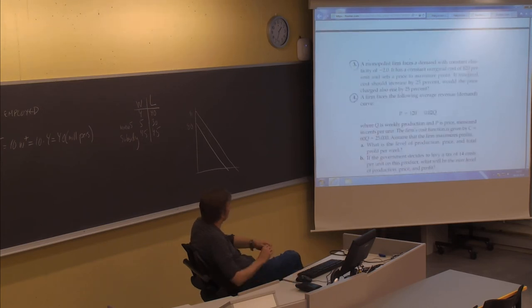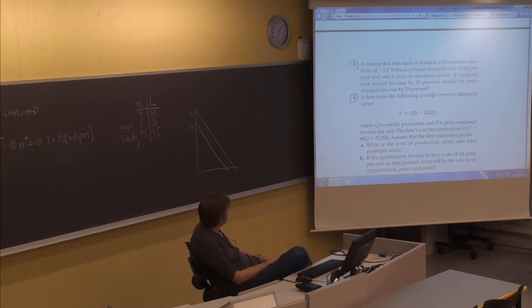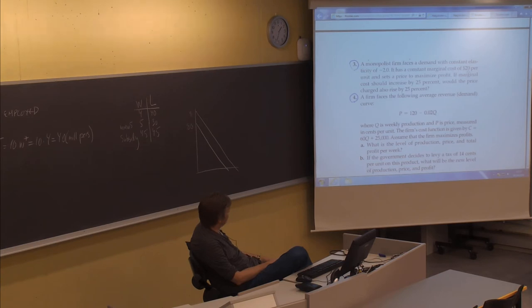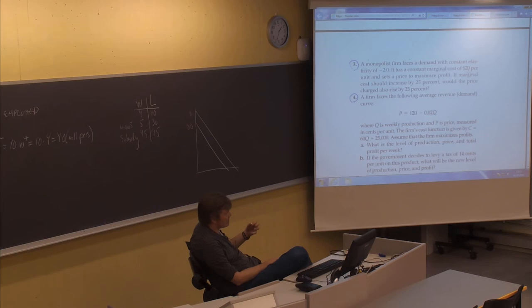The next exercise: a monopolist firm faces a demand with constant elasticity of minus 2.0. It has a constant marginal cost of $20 per unit and sets a price to maximize profit. If marginal cost should increase by 25%, would the price charged also rise by 25%? This is perhaps a slightly tricky exercise, and you need a special formula to be able to solve it.